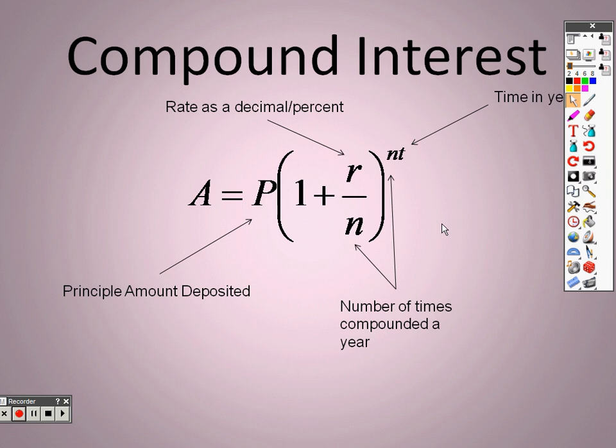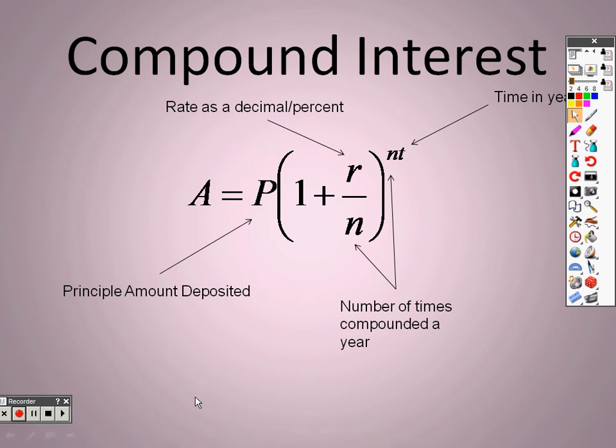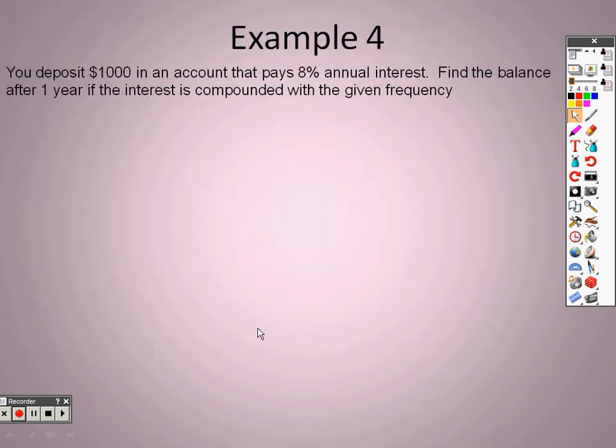And t stands for time, and time needs to be in years. That is very important. I need you to make sure that you are doing time in years when you are doing these problems. So with example 4 it says you deposit $1000 into an account that pays 8% annual interest. Find the balance after one year if the interest is compounded with the given frequency. So annually.